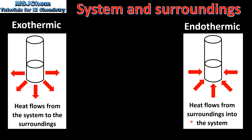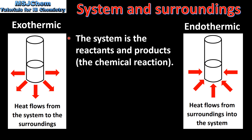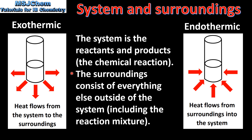Before we look at these reactions in more detail we need to know the difference between the system and the surroundings. The system is the reactants and the products — the chemical reaction. The surroundings consist of everything else outside of the system, including the reaction mixture.